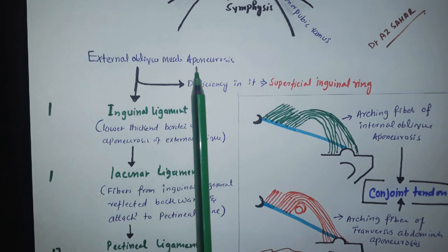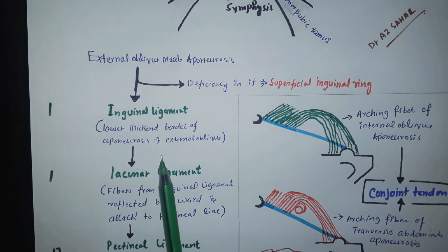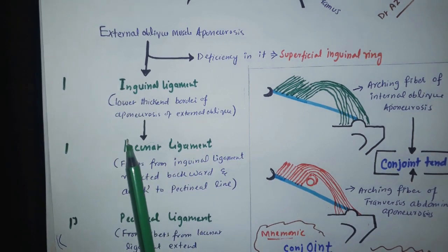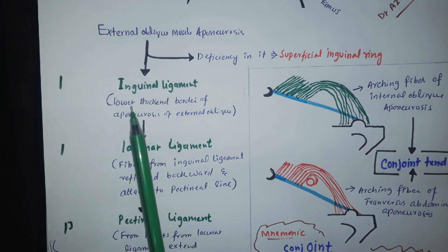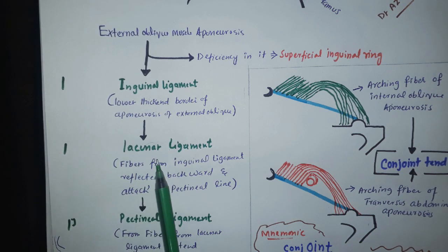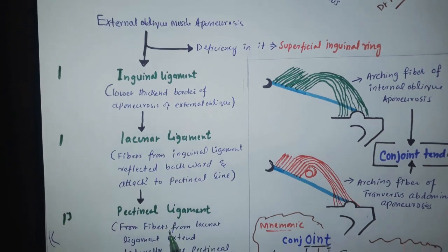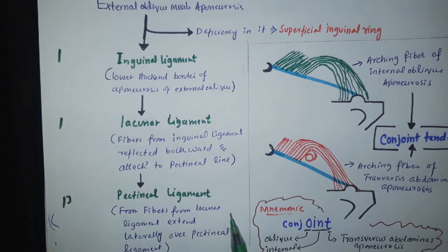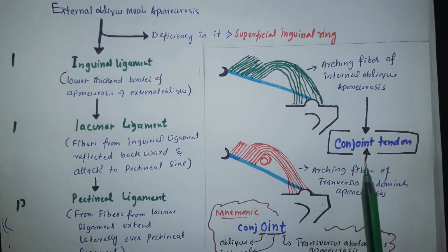To summarize: the external oblique muscle aponeurosis forms the inguinal ligament. The inguinal ligament forms the lacunar ligament, and the lacunar ligament forms the pectineal ligament. A memory tip: inguinal starts with 'I' and 'L' also looks like 'I', so inguinal ligament forms lacunar ligament.